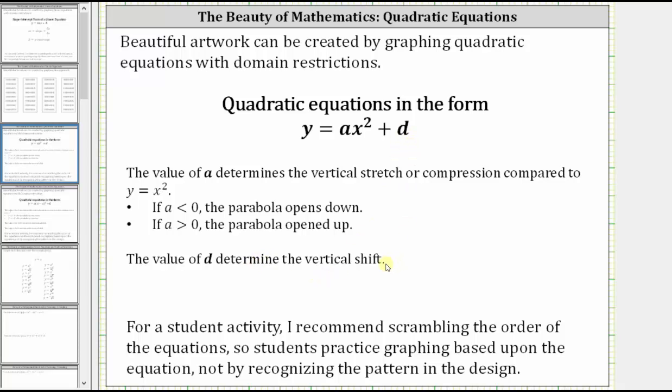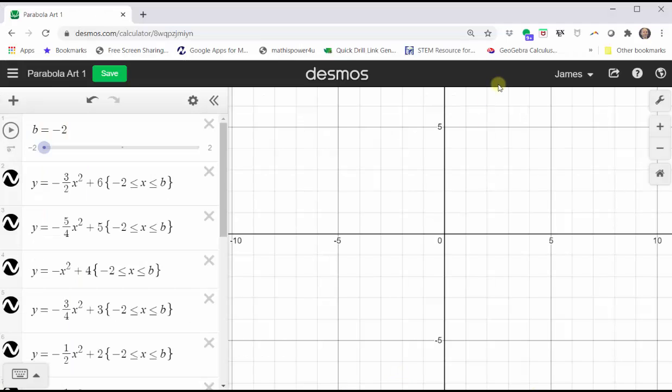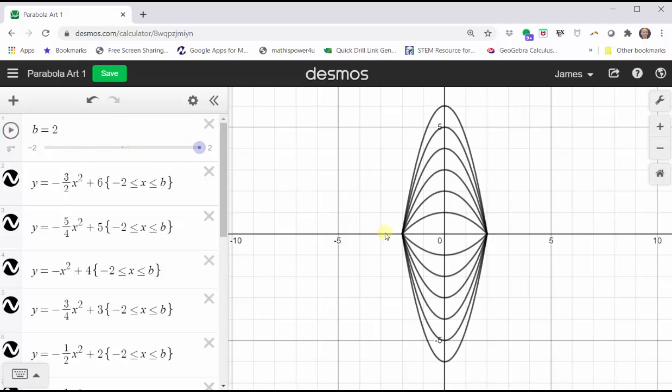Let's take a look at the artwork using desmos.com. I've already set this up, so if we click play, the graphs are animated from x equals two to x equals negative two, and here we have the artwork.